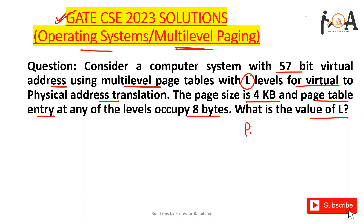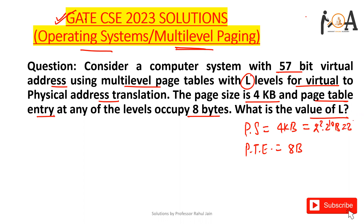We are given page size = 4KB and page table entry size = 8 bytes. We can write page size as 2² × 2¹⁰ bytes, which is 2¹² bytes. So 12 bits are required to represent the page offset.